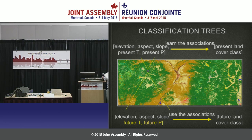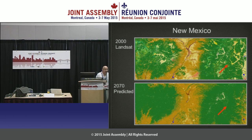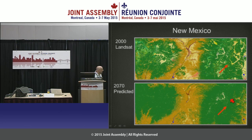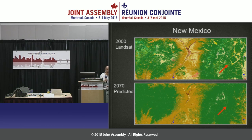Instead of associating our predictive variables — elevation, aspect, slope, present temperature, present precipitation — to a color, we now associate them to a land classification. We develop the association model, set it aside, then swap in the future temperature and precipitation to predict what future land cover classes will be. The New Mexico picture is quite similar to before — you see the loss of grasses and the infilling of evergreen vegetation.